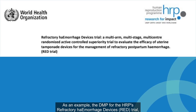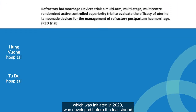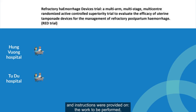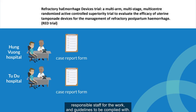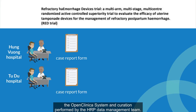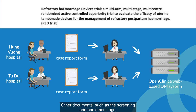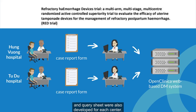As an example, the DMP for the HRP's Refractory Hemorrhage Devices REDD trial, which was initiated in 2020, was developed before the trial started. Instructions were provided on the work to be performed, responsible staff for the work, and guidelines to be complied with. Data roles and tools were defined for each participating center. Data collection was conducted using the OpenClinica system and curation performed by the HRP data management team. Other documents, such as the screening and enrollment logs, participant form register, serious adverse event tracking log, and query sheet, were also developed for each center.